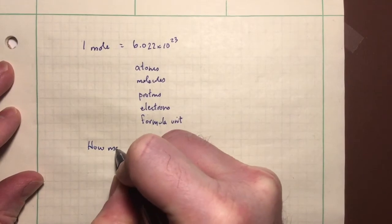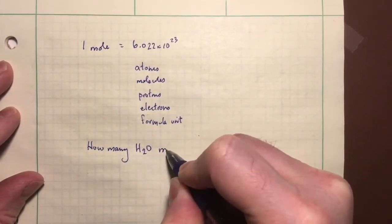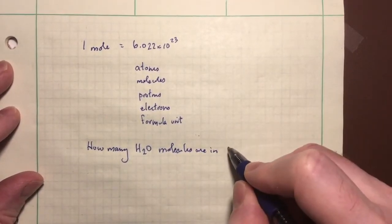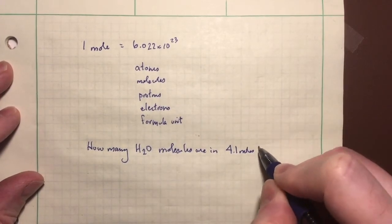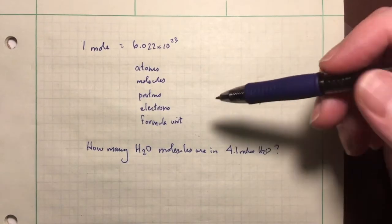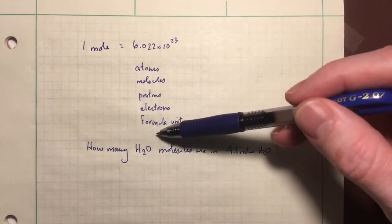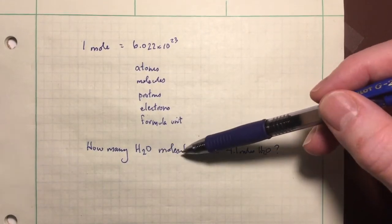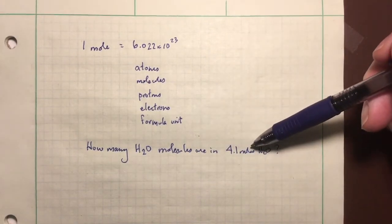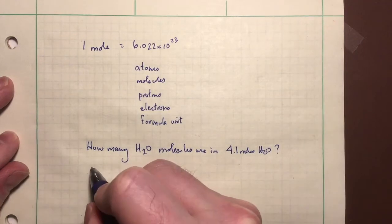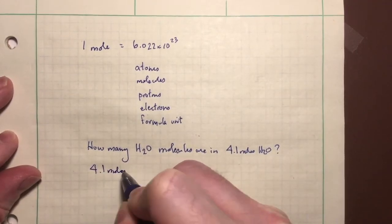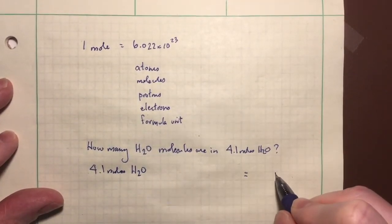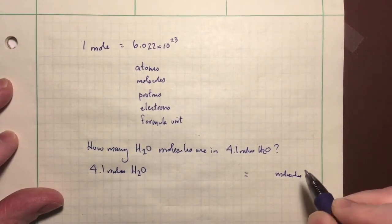How many water molecules are in, oh, let's call it 4.1 moles of water. Now right away I think you can see that we're talking about a number of particles. These particles are specifically molecules, molecules of what? Molecules of water. So how many of these molecules are in 4.1 moles of H2O. So 4.1 moles of H2O, and then how many molecules of H2O.